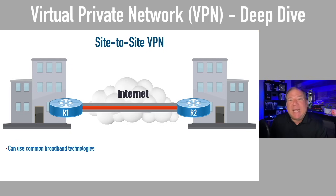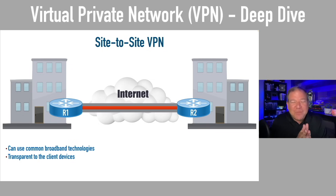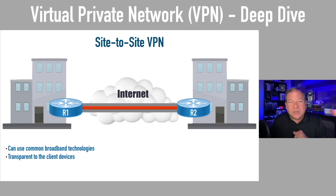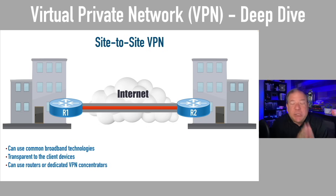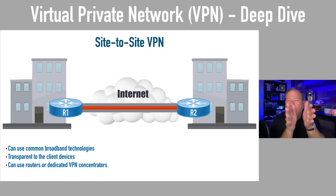The end devices have no clue there's a VPN between them. They just go to their default gateway — R1 or R2 — and it gets them to their destination. There's no work to do on the clients. I'm showing routers as the VPN endpoints, but that is an option. If you've got a headquarters, you can buy dedicated VPN concentrators where you can have lots of incoming VPN connections going out to multiple remote sites.